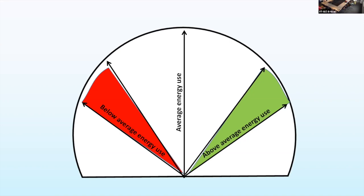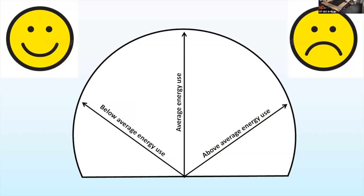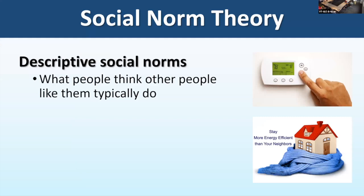So they asked: what if we added injunctive norms—not just descriptive? All they did was add a smiley face to letters sent to below-average users. The result: an even larger reduction in energy use overall, and the boomerang effect was gone. People who already used less energy were like, 'Yay for me.' A simple demonstration of how a super simplistic little idea can have a big impact on your success.